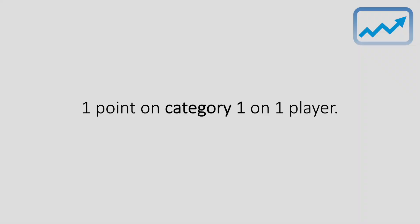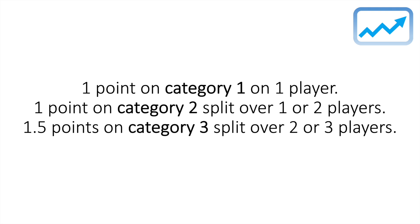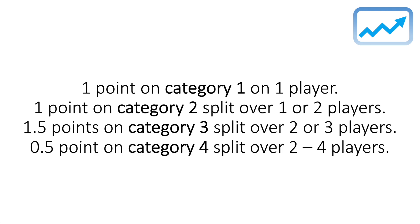Here is the staking plan for this strategy. We are only risking an overall trade stake of four points. I'll place one point on a category one player — priced under 5.0. Another point on category two players, split over one or two players depending on other criteria. Then 1.5 points on category three players, possibly over two or three players. And the final half a point on a category four player, split between two to four players. These are very high risk but offer high reward if they pay off.